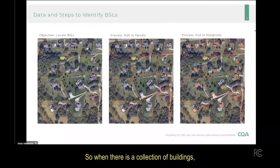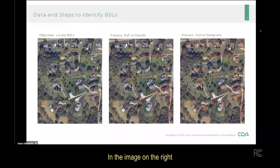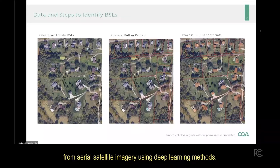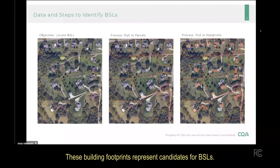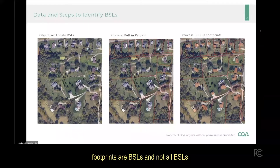When there's a collection of buildings and we know the parcel, we look at the collection of buildings within that parcel to make our determination. In the image on the right, we bring in building footprint data. Building footprints are extracted from aerial and satellite imagery using deep learning methods. These building footprints represent candidates for BSLs. It's important to note that not all building footprints are BSLs, and not all BSLs are represented by a building footprint.